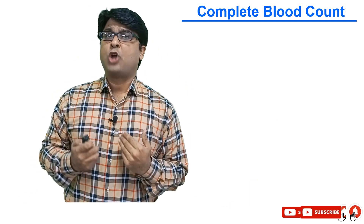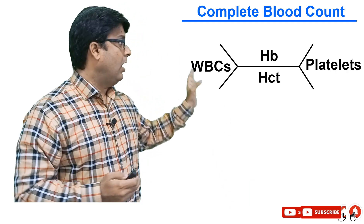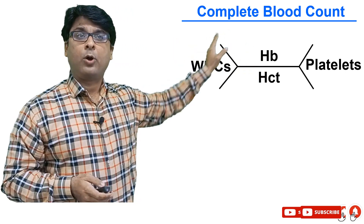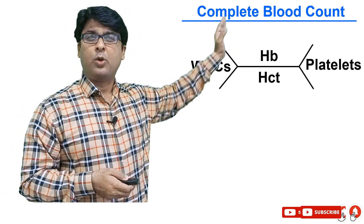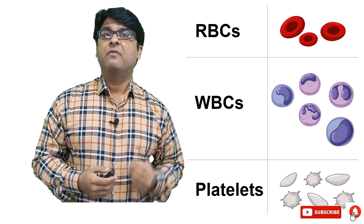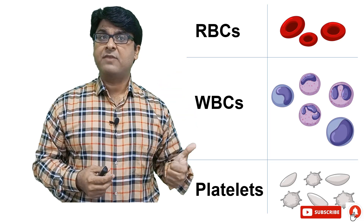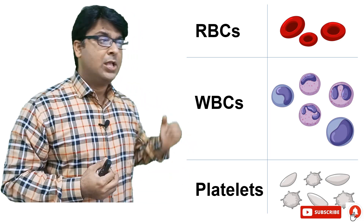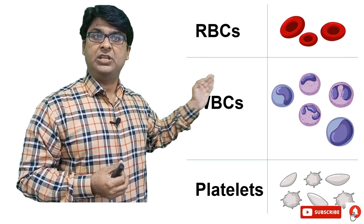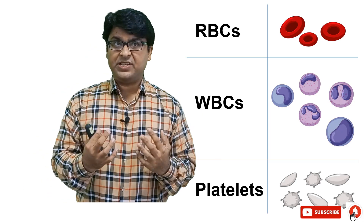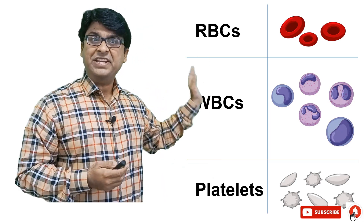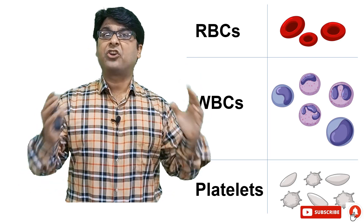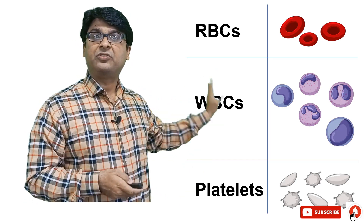When we talk about CBC, these are the different parameters we discuss. Here's a fishbone analysis. We talk about WBCs, we talk about platelets, and we talk about parameters associated with red blood cells — hemoglobin, hematocrit and other parameters. So basically, we have three types of cells to talk about: red blood cells (erythrocytes), WBCs (leukocytes), and platelets (thrombocytes). A CBC report is comprised of numeric, quantitative, qualitative, and structural details associated with these three cell types.